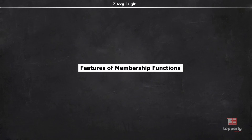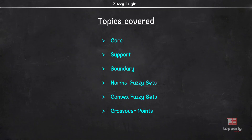Hey everyone, welcome back to Fuzzy Logic Lectures. In the last few videos of this series, we learned about the various ways of fuzzification, that is, how to develop a membership function. Continuing from that, we will learn about various features of membership function in this lecture. Mainly, we will learn about the vocabulary of terms like core, support, boundary, normal and convex fuzzy sets, and finally, crossover points. So let's start our lecture.